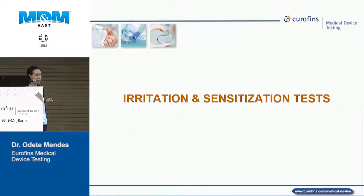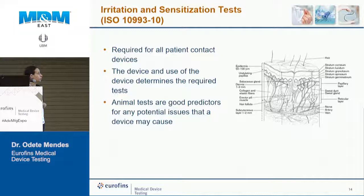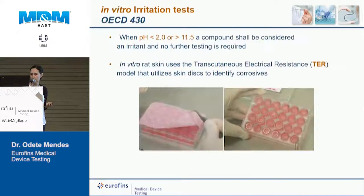Irritation and sensitization tests are also very commonly required. They are described under ISO guideline 10993 Part 10 and are used for any contact device, since the main organ evaluated is the skin. The type of device will dictate what type of irritation test is needed. In vitro irritation tests can be used, but in some cases animal testing may also be required.